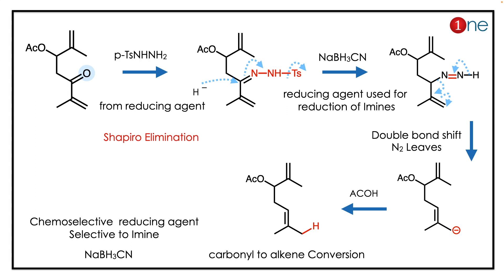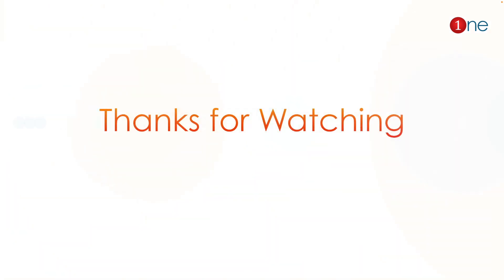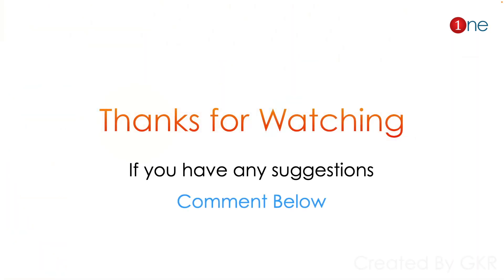Sodium cyanoborohydride is a chemoselective reagent — it reduces the hydrazone to the imine. The key concept here is Shapiro elimination: Shapiro elimination converts the carbonyl into an alkene. That's all from this video, thanks for watching. If you have any suggestions, comment below.